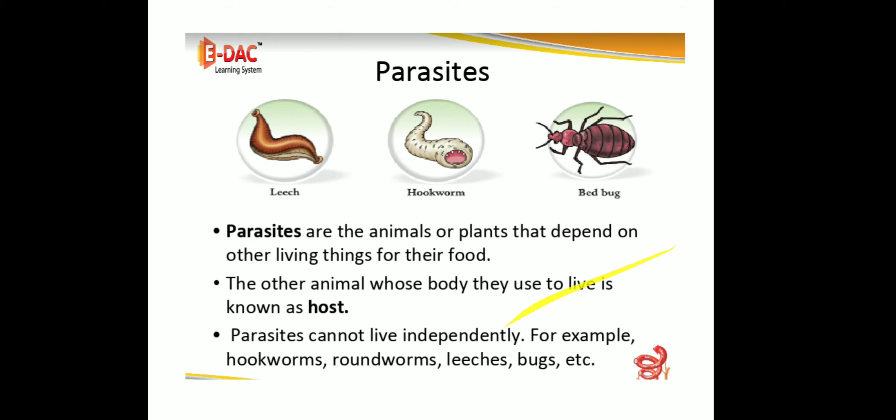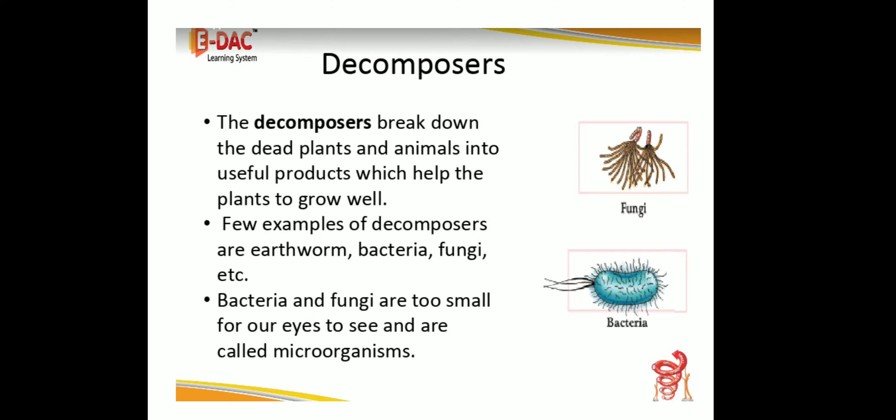Children, now we are going to see about decomposers. Listen: decomposers break down dead plants and animals into useful products which help plants to grow well. Few examples of decomposers are earthworm, bacteria, fungi, etc. Bacteria and fungi are too small for our eyes to see and are hence called microorganisms. You can see images of fungi, bacteria on the screen.